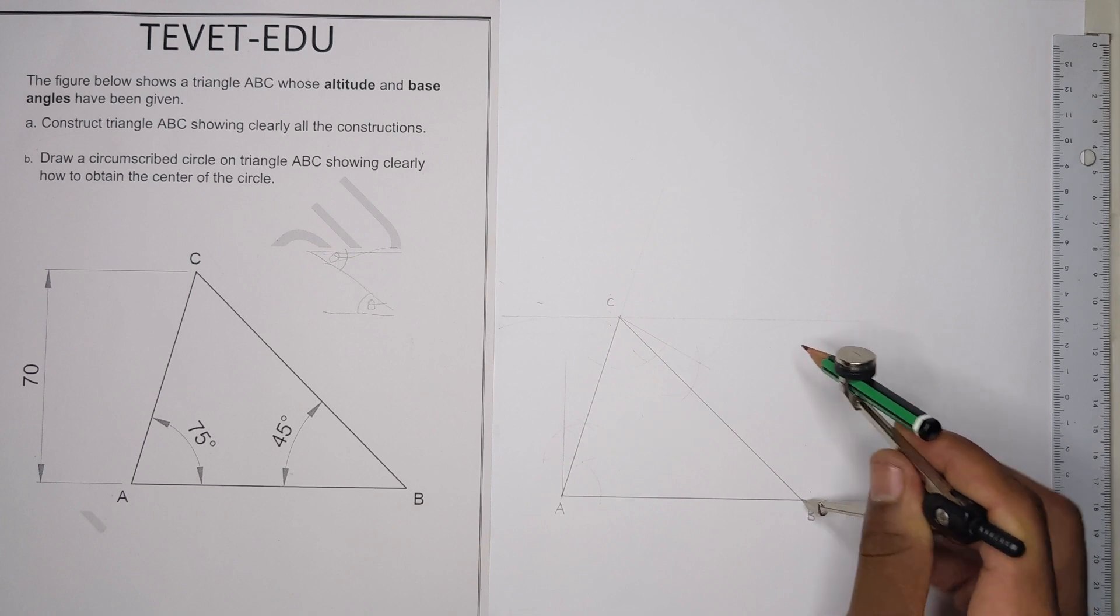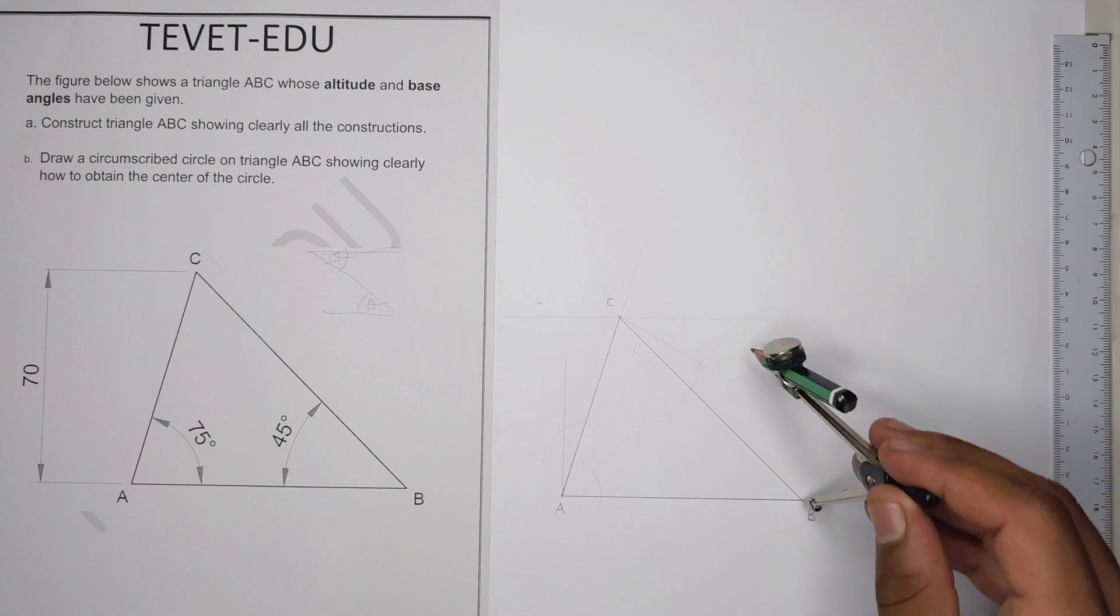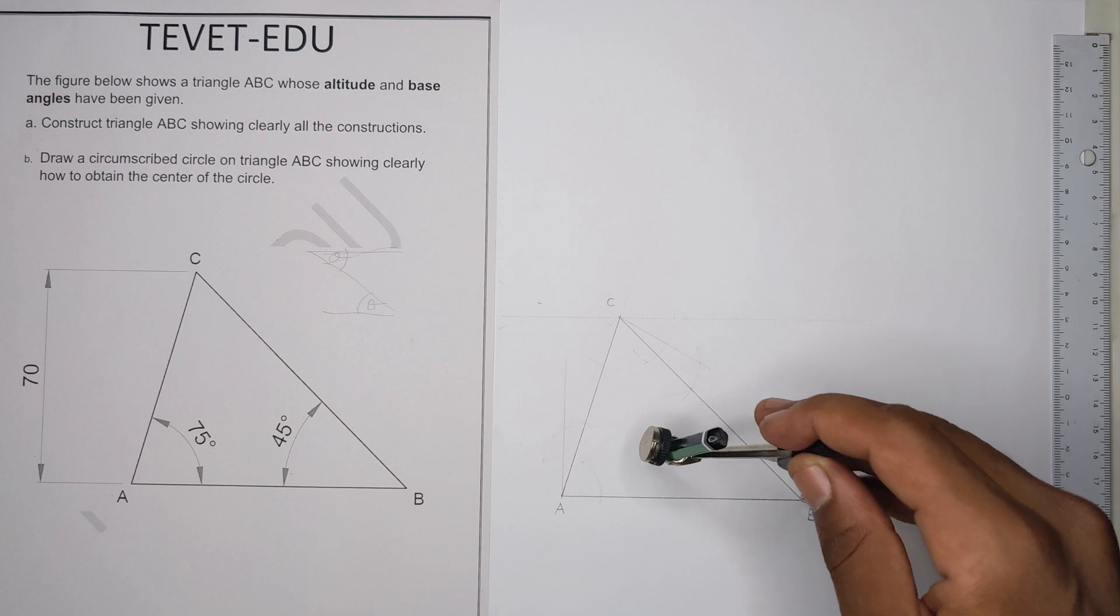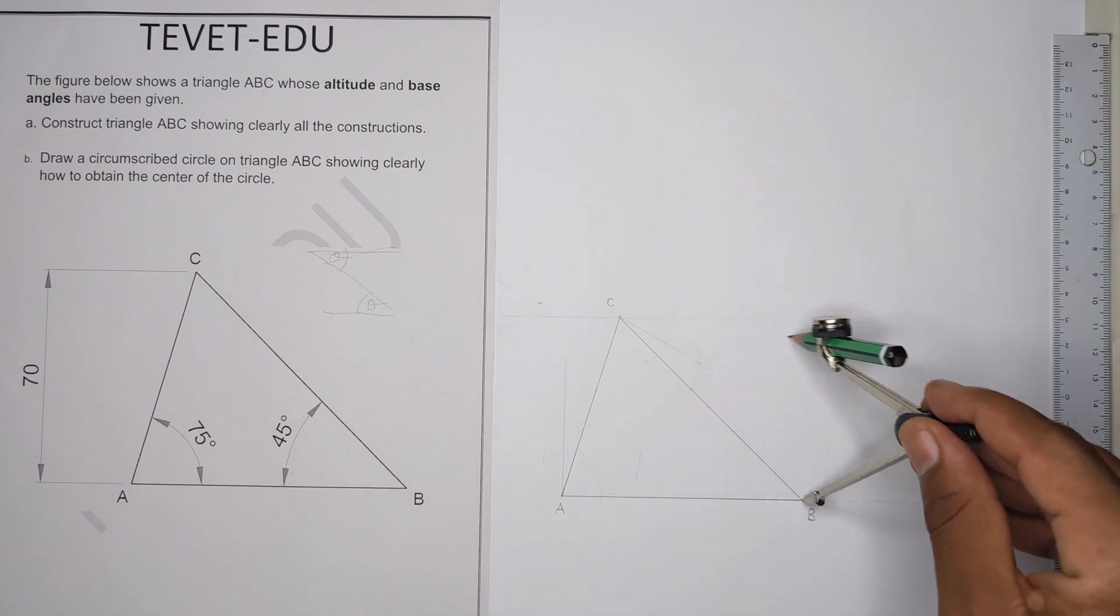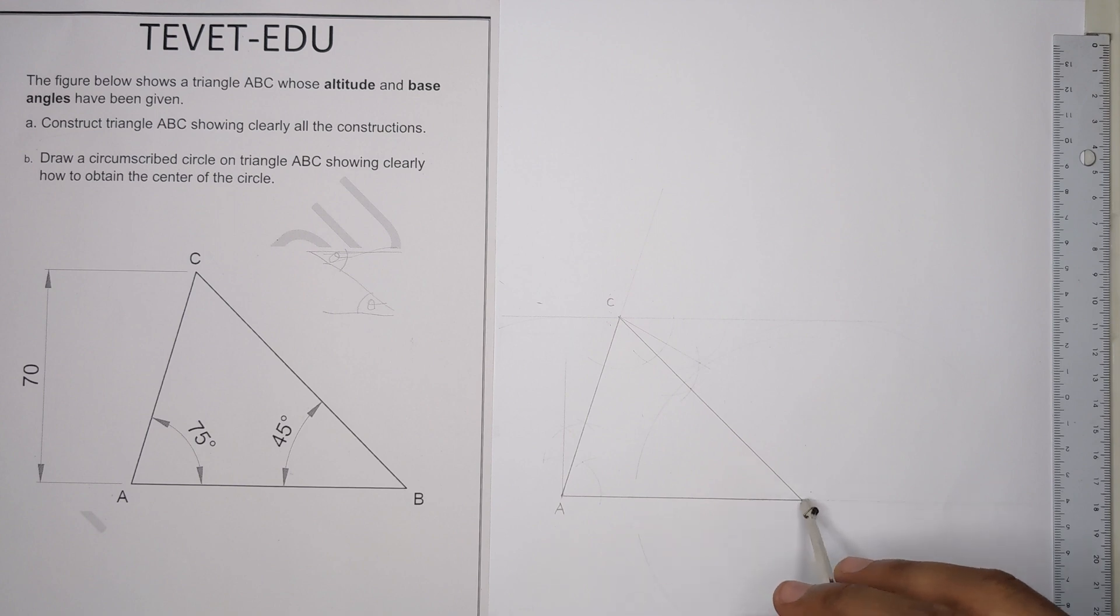For us to find a circumcenter, we just bisect any two sides of the triangle, and then where the bisectors meet, that would be the center for the circle - that would be your circumcenter. Here I'm going to bisect these two lines: line AB and line BC.